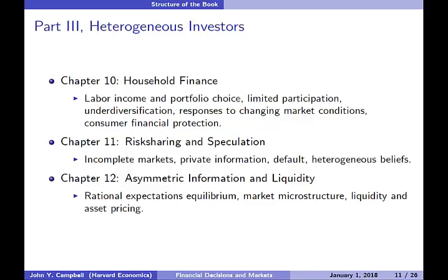The final part of the book, part three, is on heterogeneous investors. Chapter ten begins by summarizing the large and relatively new literature on household finance — looking at the decisions of ordinary households in financial markets and the special features of their optimization problems that may influence asset pricing. This chapter begins by talking about labor income and how that may affect portfolio choice, then the evidence that many households don't take any risk at all and don't participate in risky asset markets. There's a section on under-diversification, various ways in which households do or do not respond to changing market conditions, inertia, the disposition effect, and a very brief section on consumer financial protection.